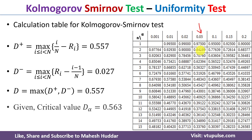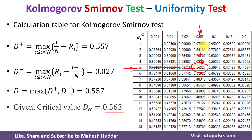Here the alpha value is 0.05, so we use this column to find the critical value. The row is determined by the number of given random numbers, which is 5. From this row and column, we get a critical value of 0.56327. So if the critical value is given, we compare it with the calculated value. If not, we use the D-table to find the critical value.